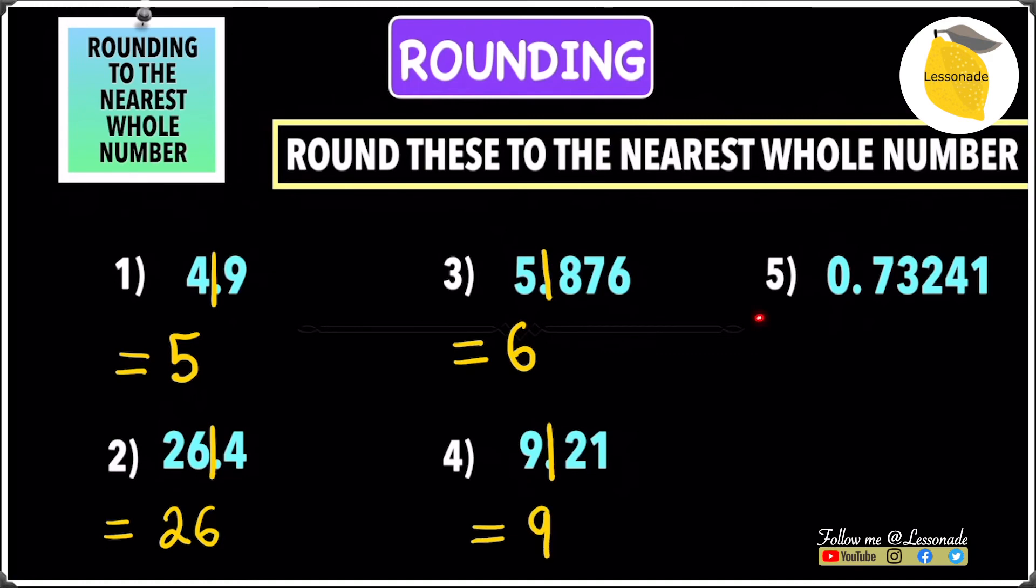Let's move to the final question, which is 0.73241. We're going to round to the nearest whole number, which is 0. Draw a line after 0 and look at the number after the line, 7. If the digit after the line is 5 or above, add 1 to 0, so you get 1.